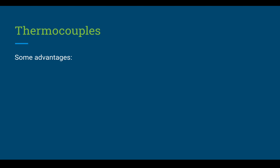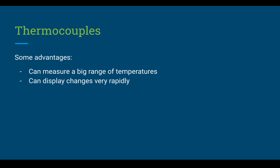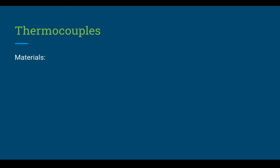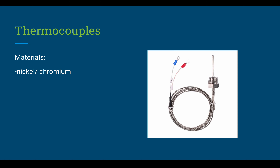Some advantages of using a thermocouple: number one, they can measure a very large range of temperatures, going up to very high temperatures. Number two, they can display changes very rapidly because it's like a digital scale. Number three, they can be used in dangerous environments. The materials thermocouples are normally made from are nickel and chromium, which is mainly restricted by the melting point of the metal used.